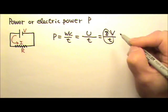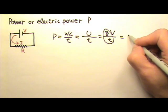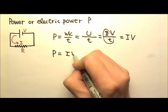And what is charge divided by time? That is the current. So this is I times V. So power equals I times V.